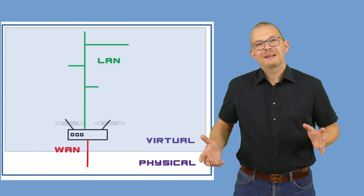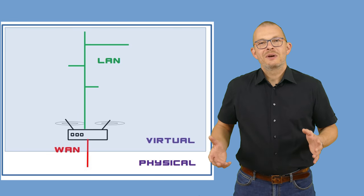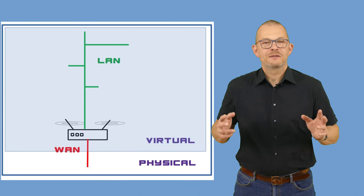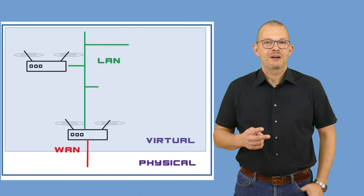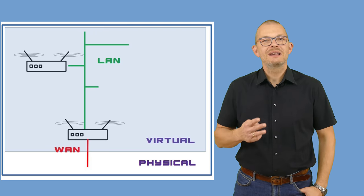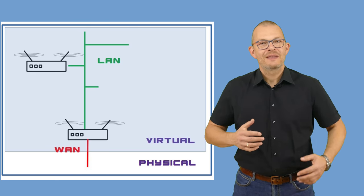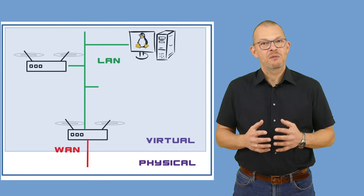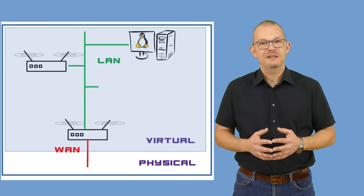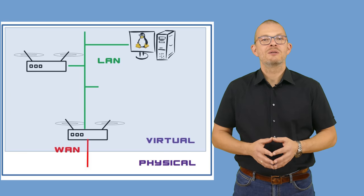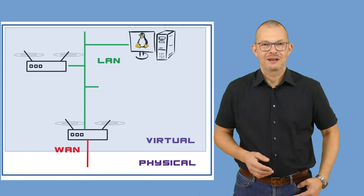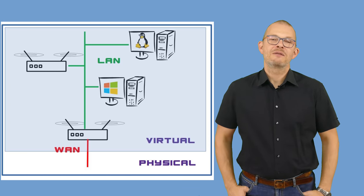We will build a virtual environment that consists of two OpenWrt routers, a Linux machine and a Windows machine. The software that we will use to achieve this is called VirtualBox from Oracle. It's available for free.